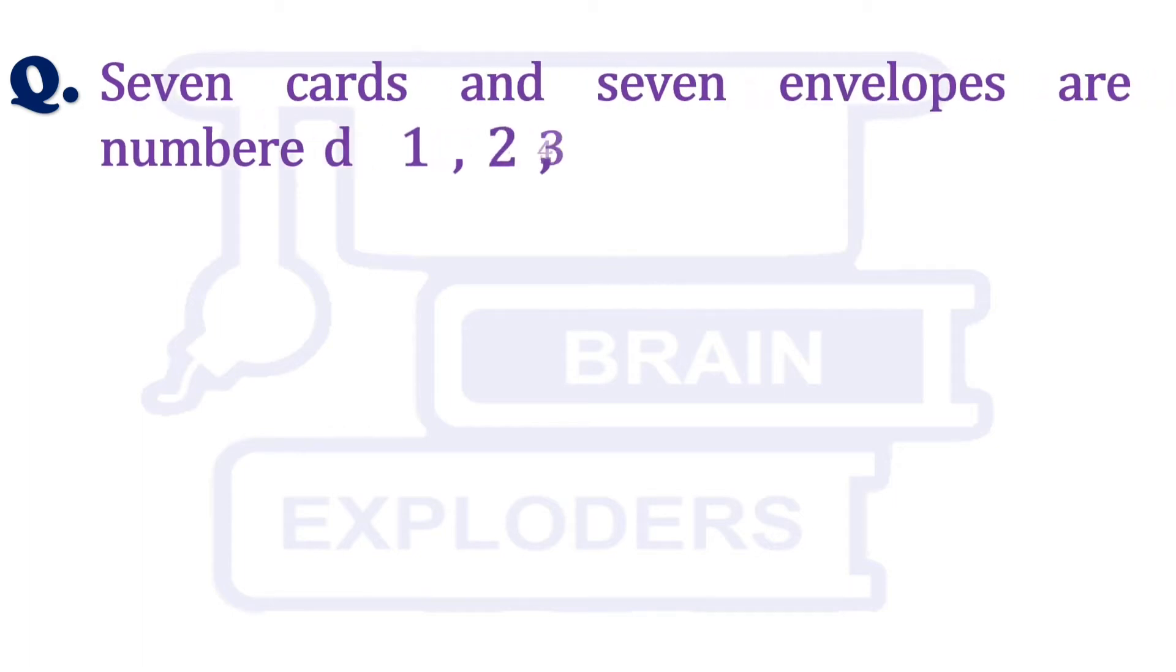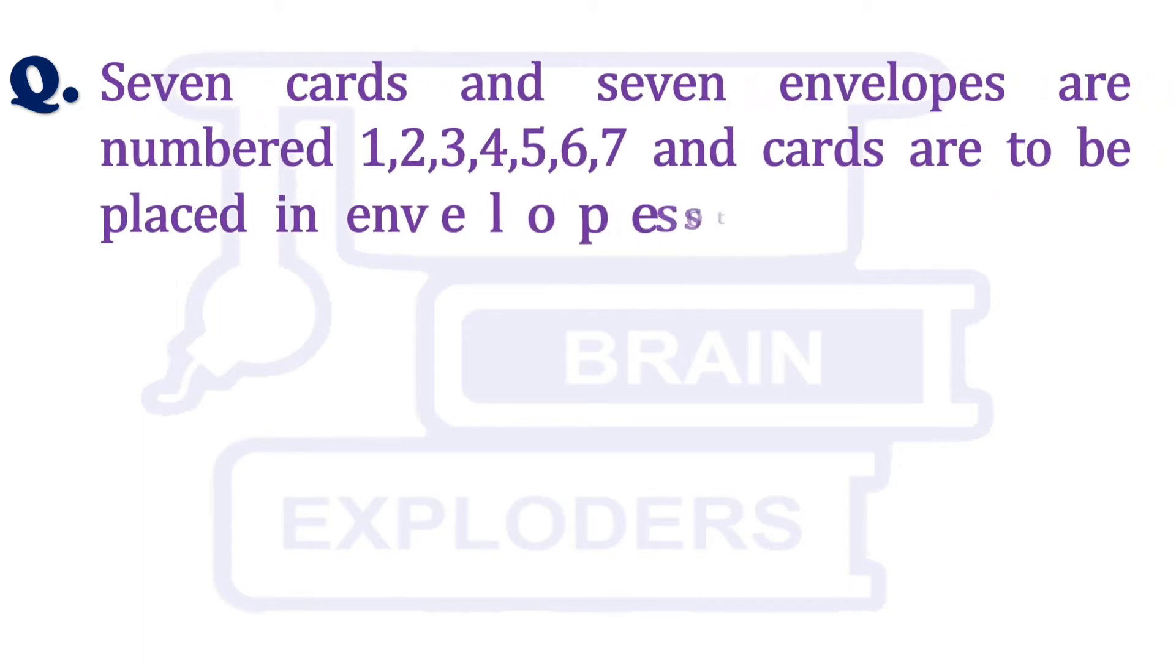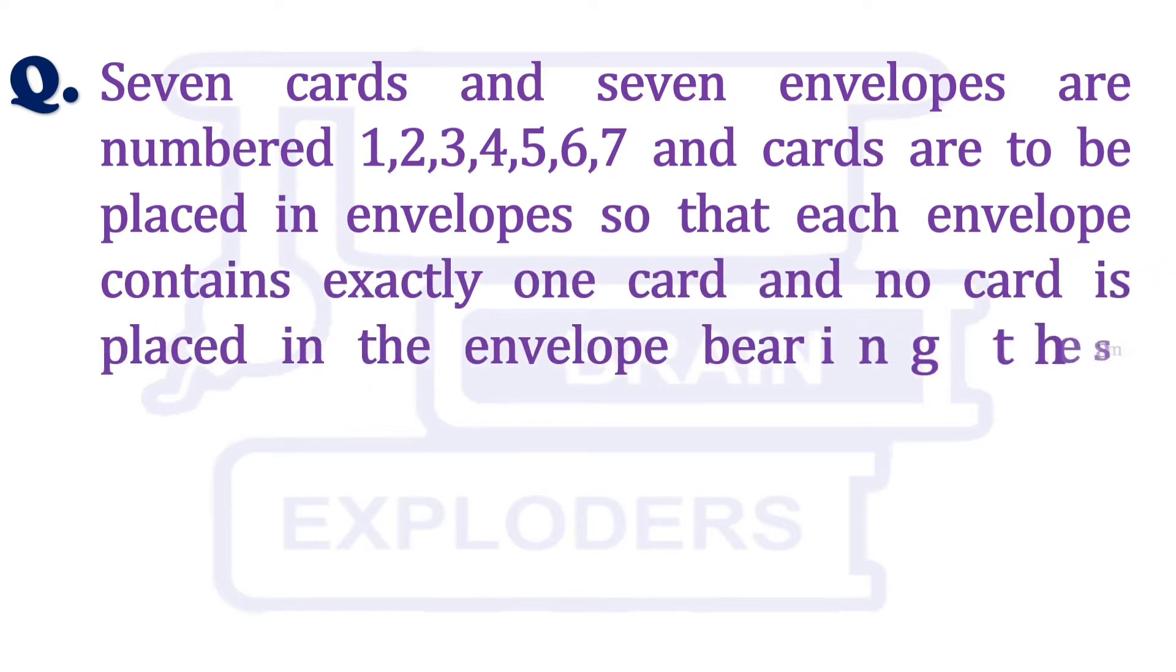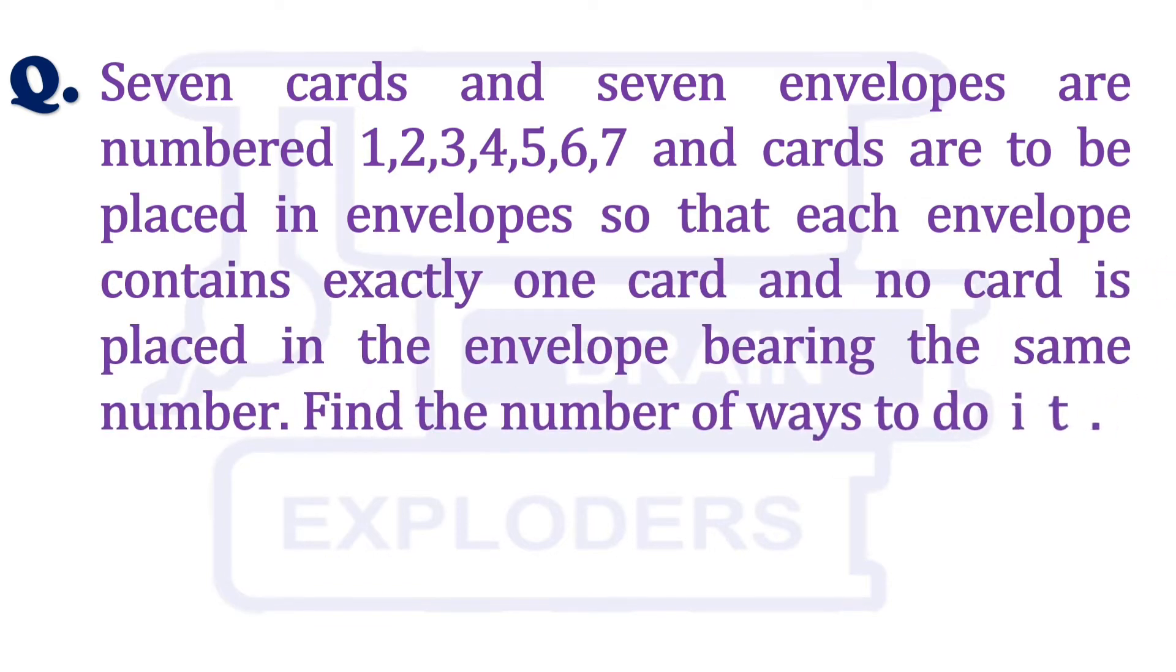Seven cards and seven envelopes are numbered 1 to 7 and cards are to be placed in envelopes so that each envelope contains exactly one card and no card is placed in the envelope bearing the same number. Find the number of ways to do it.